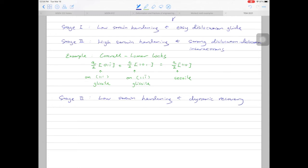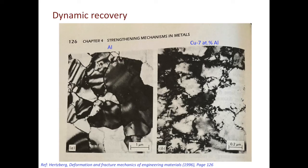In this stage, the strain hardening rate will decrease again. Here are two examples showing the dynamically recovered microstructure in aluminum and copper aluminum alloy. In both cases, the dislocations rearranged themselves to form cell boundaries, and within each cell there's nearly no dislocations.